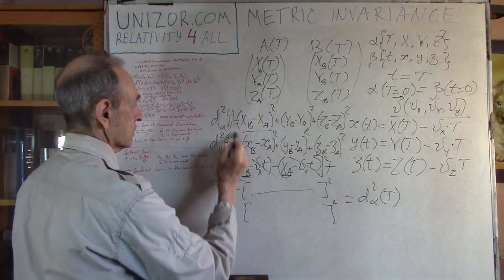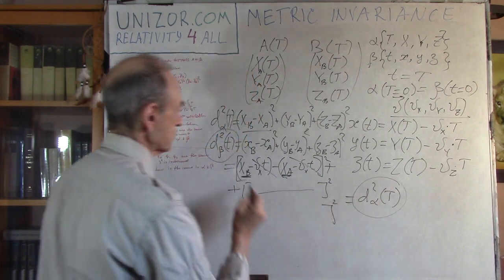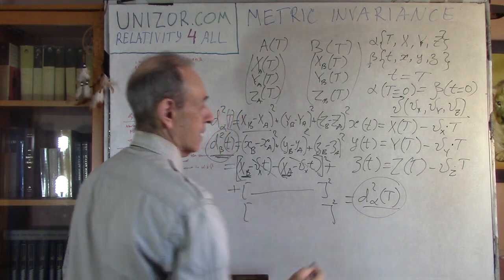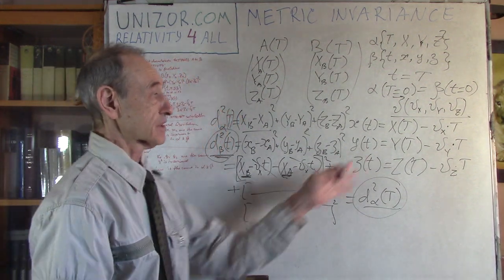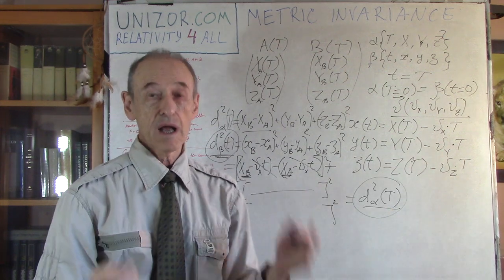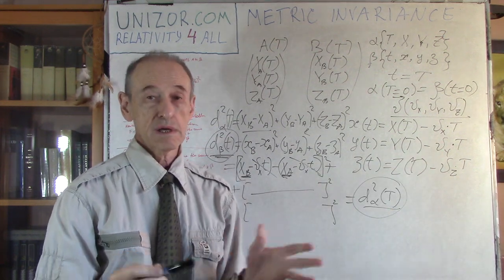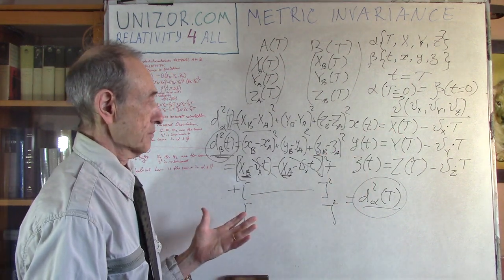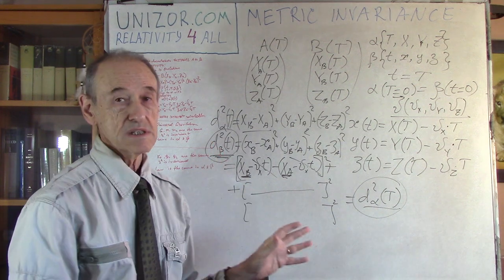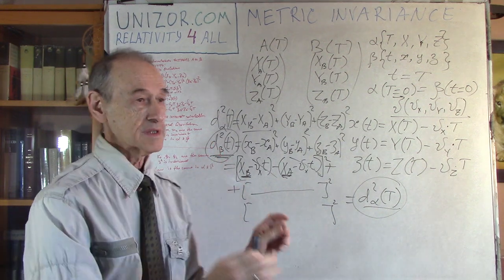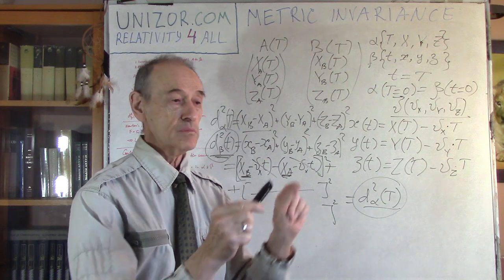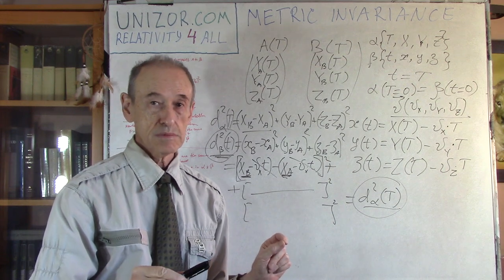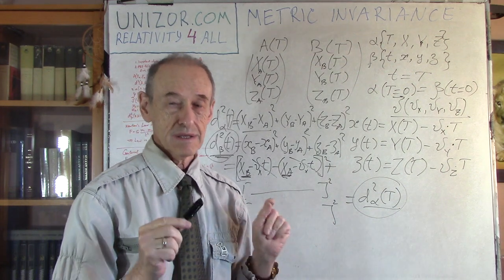Which means the whole expression equals d²_α(t). So the squared distance in the beta system equals the squared distance in the alpha system. The distance between two points — whether moving or stationary — viewed from two different inertial systems, is exactly the same.